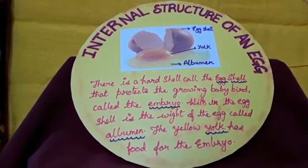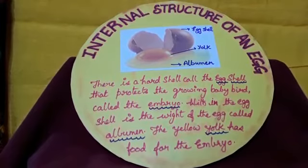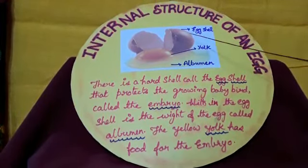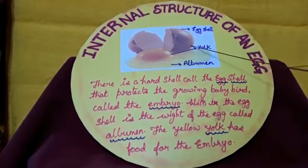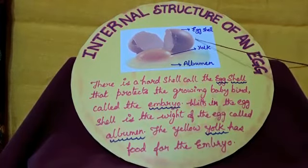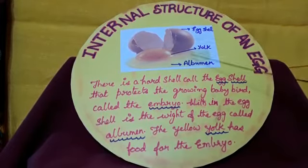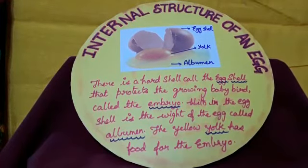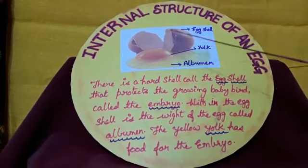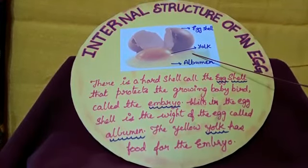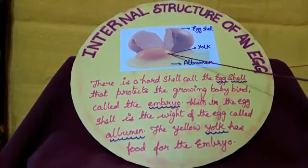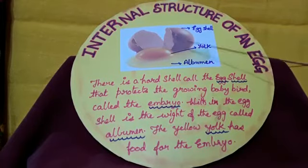Birds reproduce by laying eggs. Coming to the internal structure of an egg, the egg has a thick hard shell which protects the growing baby, which is called the embryo. Within the egg, there is egg white and yolk. Egg white is called albumin and the yellow color is called yolk.